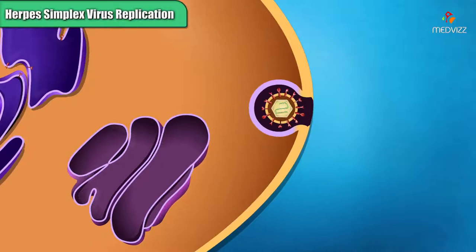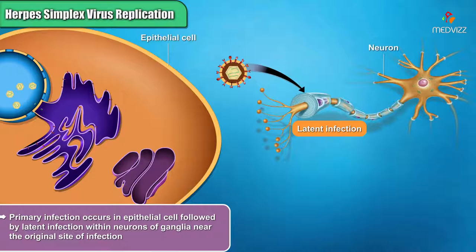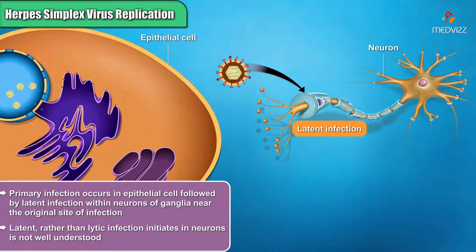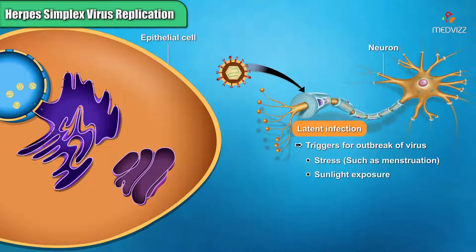The completed virion is now outside the cell. The primary infection occurs in epithelial cells, followed by latent infection within neurons of ganglia near the original site of infection. How a latent rather than lytic infection initiates in neurons is not well understood. The latent infection of the ganglia later leads to new outbreaks of virus, often triggered by stress, sunlight exposure, or depression of the immune system. Progeny virions travel back to the epithelia, causing lytic infection.